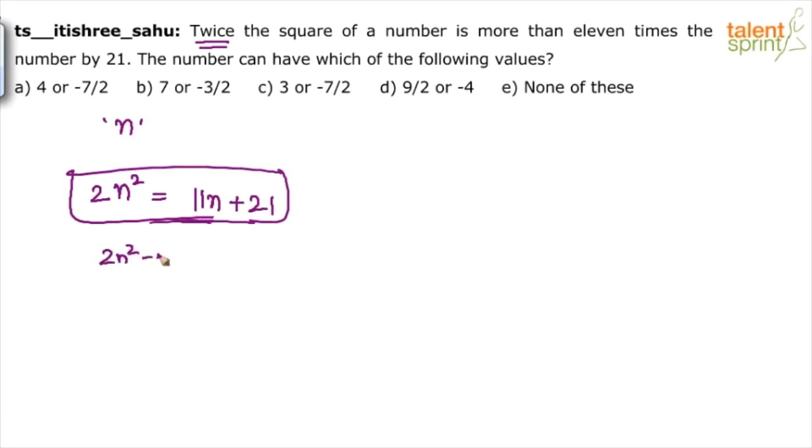So what do we get? 2N square minus 11N minus 21 equals to 0. Minus 21 equals to 0. So minus 42. How do we get minus 42 here? Minus 14 plus 3. 14 into 3 is 42. So 2N square minus 14N plus 3N minus 21 equals 0.